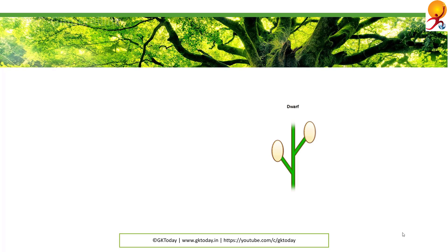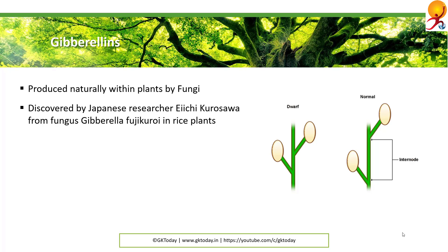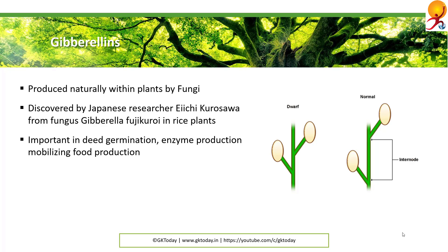Next we come to gibberellins. Gibberellins, or GAs, include a large range of chemicals that are produced naturally within plants and by fungi. They were first discovered when Japanese researchers including Eiichi Kurosawa noticed a chemical produced by the fungus Gibberella fujikuroi that produced abnormal growth in rice plants. Gibberellins are important in seed germination; they affect enzyme production that mobilizes food reserves used for growth of new cells, done by modulating chromosomal transcription.